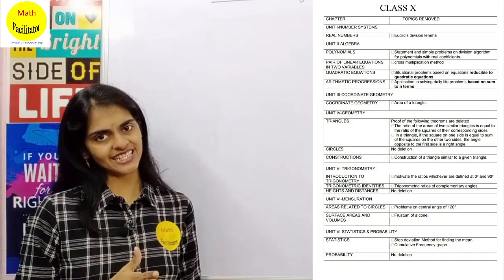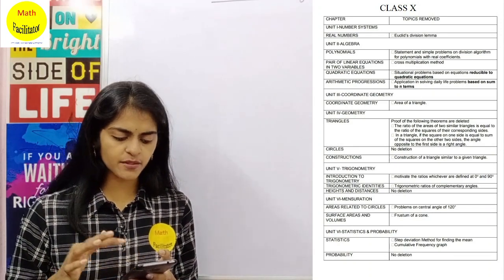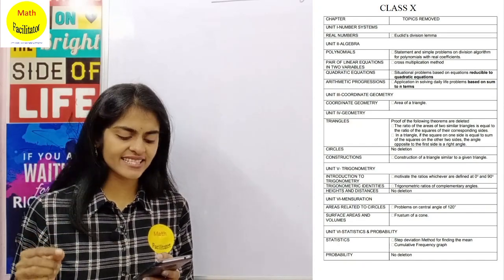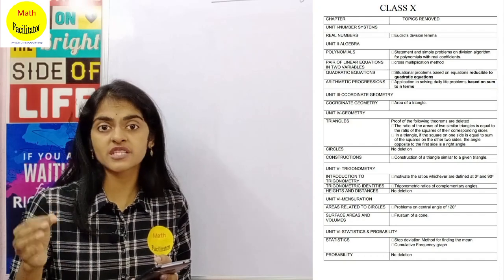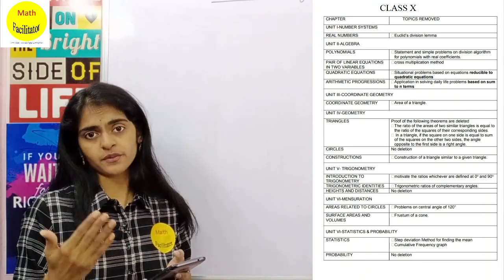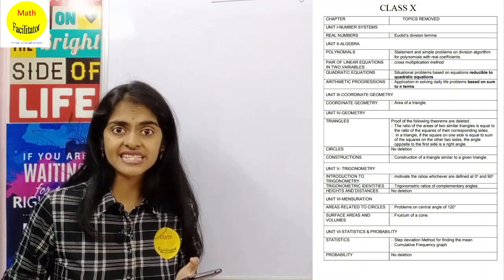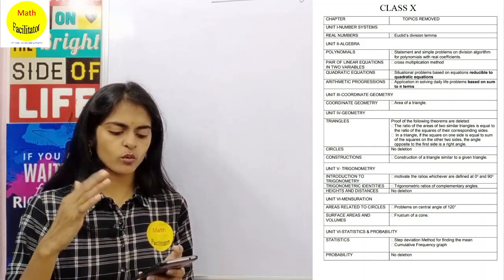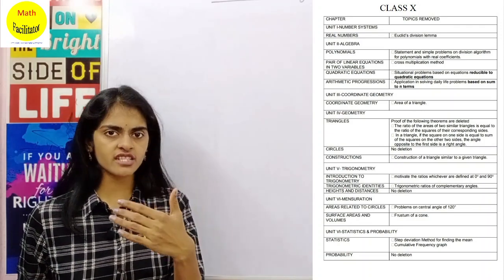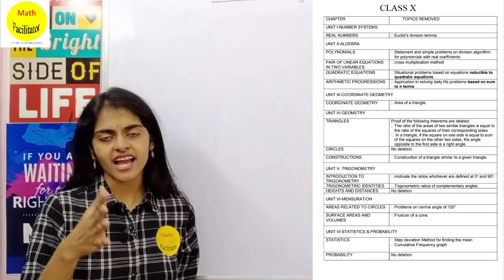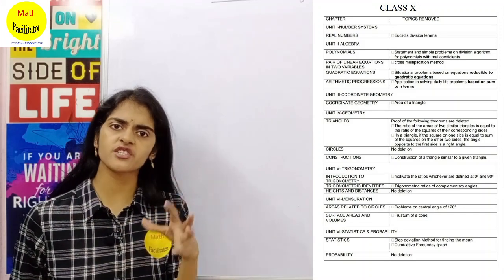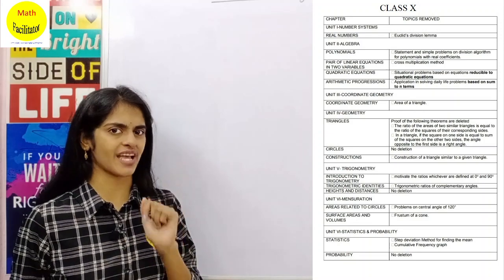In class 10 Real Numbers, Euclid's Division Lemma is deleted. In Polynomials, simple problems on division algorithm for polynomials with real coefficients is deleted. There is only hardly one topic deleted per chapter, and in some chapters no topics are deleted at all. I suggest you have an idea of the entire book, and the deleted topics you may leave for your revision time — during examination time, just focus on the topics which are there in the syllabus, as these deleted topics won't be asked in your examination.